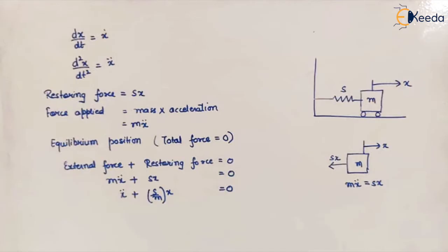Let's assume that there is a mass connected to some spring and it is having some displacement in the x direction. We know that if x is the displacement, dx/dt or change in displacement with respect to time gives the velocity, and change in velocity with respect to time gives the acceleration.